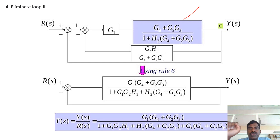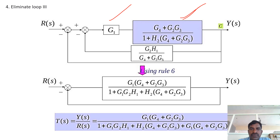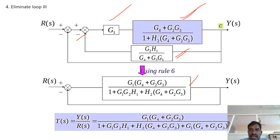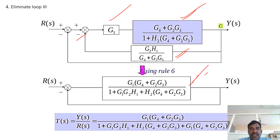Now G1 and the reduced block are in cascade, so we multiply these two. After adding them, we get one remaining loop. That loop is a negative feedback loop. After combining G1 with G4 plus G2·G3 divided by (1 plus H2·G4·G2·G3), and eliminating the H1 loop, we get G1·(G4 plus G2·G3) divided by 1 plus G1·G2·H1 plus H2·(G4 plus G2·G3).